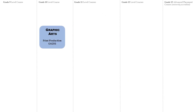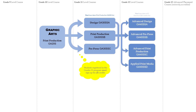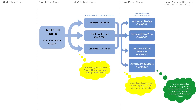Graphic Arts is an optional course that can be taken starting in Grade 9 or 10. A cluster of Grade 11 level courses must be taken in this program. Grade 12 level courses are also mandatory in this program based on the previous cluster or prerequisites. This is an accredited vocational program that Apprenticeship Manitoba recognizes towards training institutions and colleges.